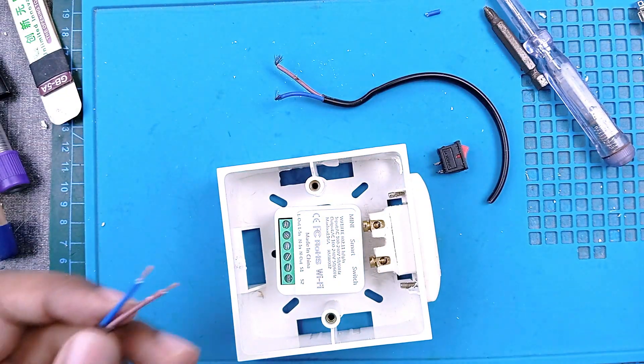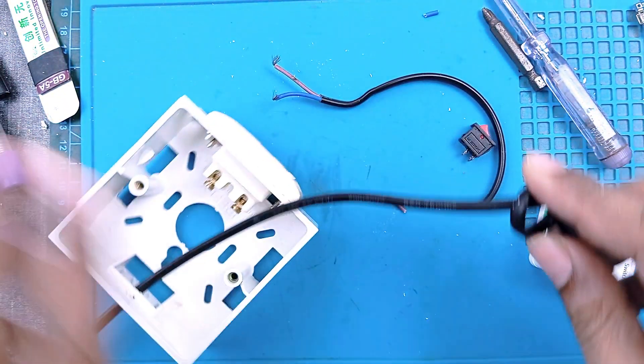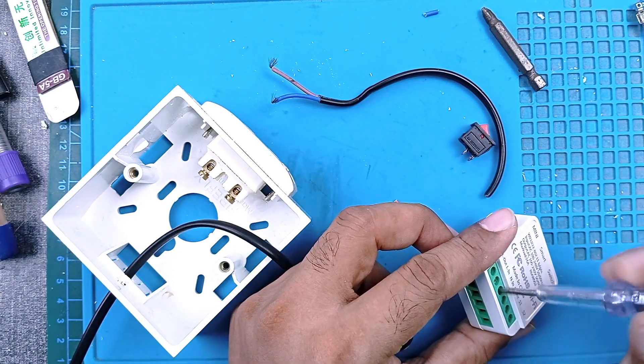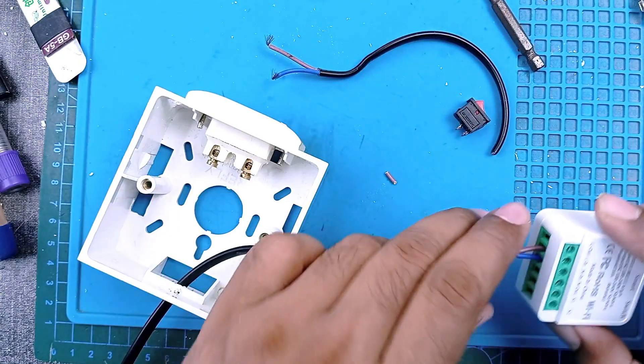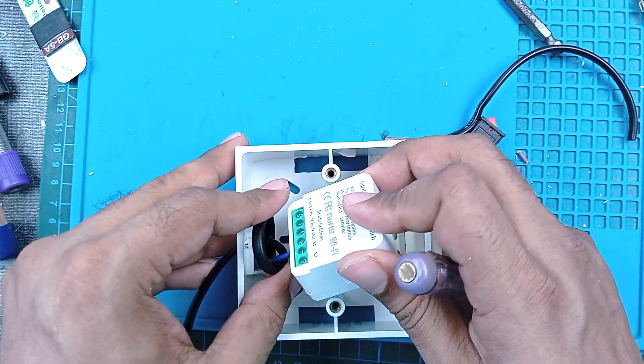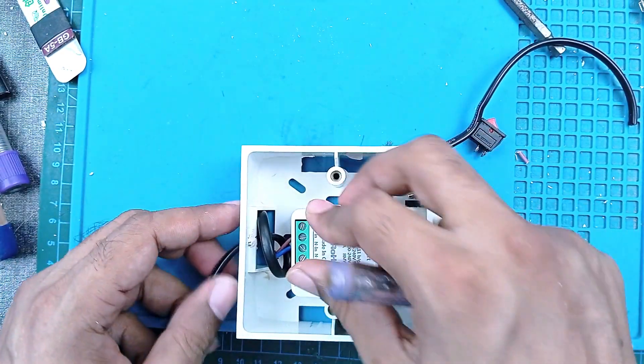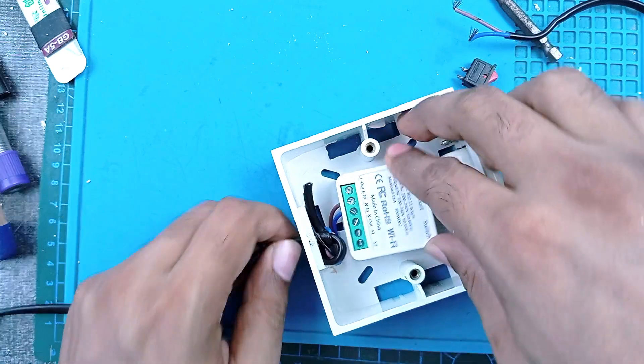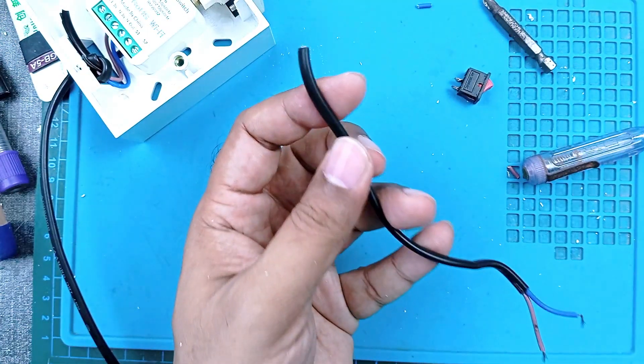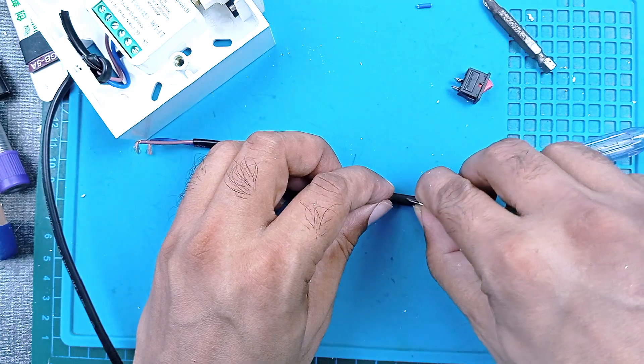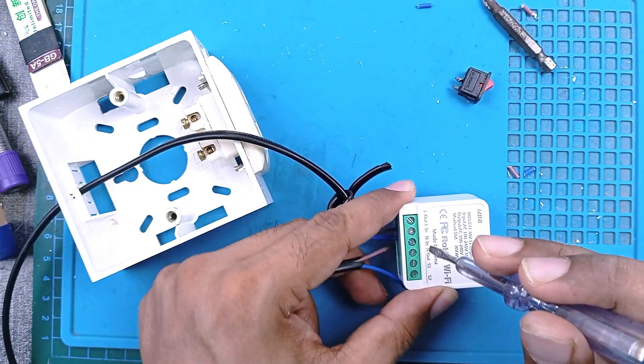Input cable: line in, neutral in. The red one should be line in and neutral in. The input cable is connected and secured.